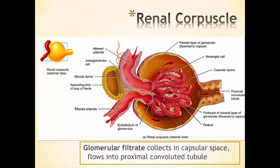Looking more closely at the renal corpuscle itself — this is the glomerulus plus the Bowman's capsule together. You've got this big tuft of capillaries where fluid leaves those capillaries and enters into the Bowman's capsule. The filtrate then exits out through the proximal convoluted tubules. You can see here the efferent and afferent arterioles — the afferent brings blood in, the efferent takes blood out from the glomerulus. Notice the ascending limb of the loop of Henle is positioned right in between the afferent and efferent arterioles. There are also mesangial cells scattered throughout the glomerulus — these are specialized smooth muscle cells that help control the amount of filtration happening between the glomerulus and the Bowman's capsule.